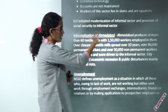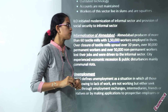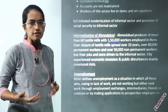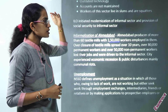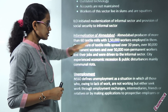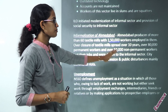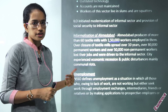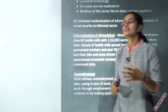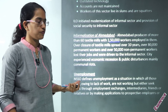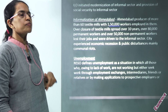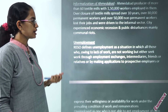A case study of informalization is Ahmedabad. Ahmedabad had more than 60 textile mills with nearly 1.5 lakh workers. However, there was a drastic closure of textile mills in the last 10 years — nearly 80,000 permanent workers and 50,000 non-permanent workers lost their jobs. This caused severe economic recession in the city and communal unrest. That is why we require better formalization of structures, stronger trade unions and labour laws.